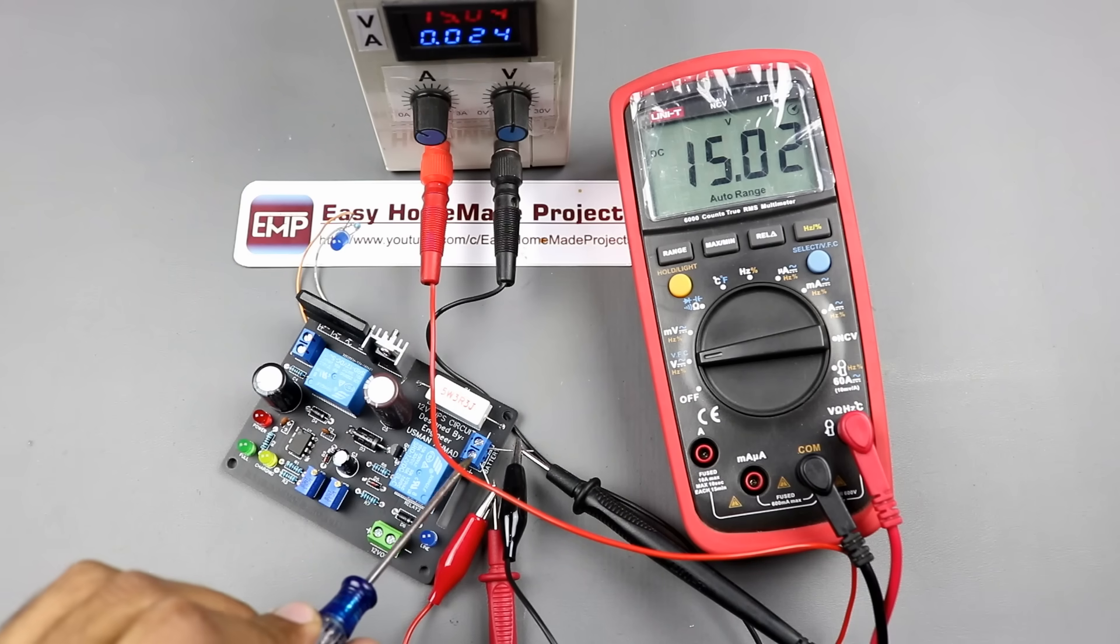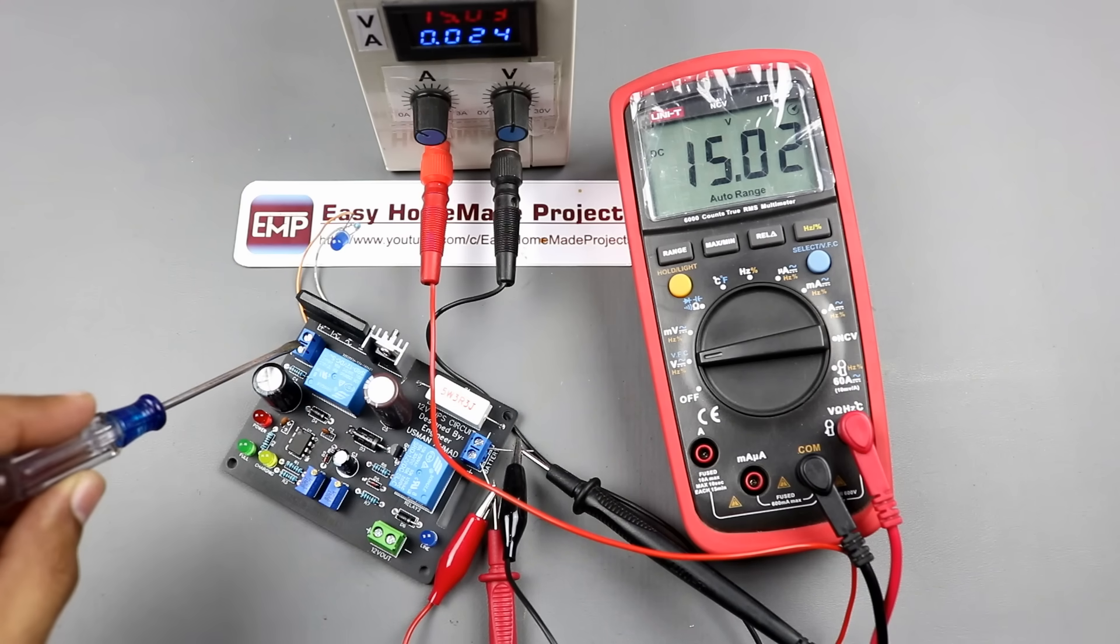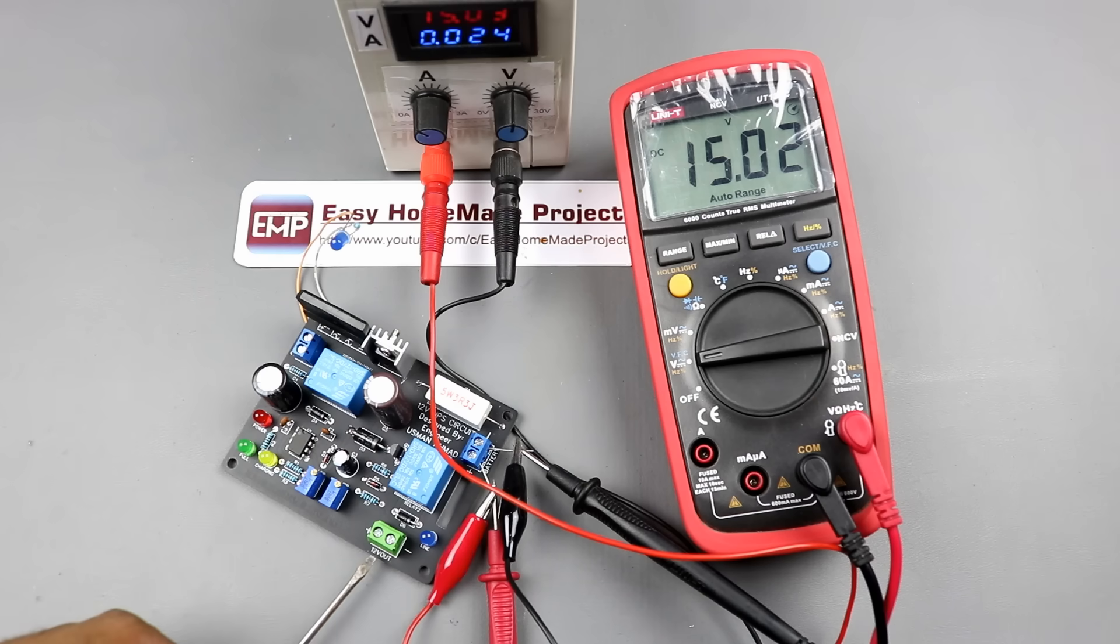Now, we will need to connect a 12-volt LED acid battery here and a 15-volt transformer here. And from here, we can get 12-volt output for our internet device.